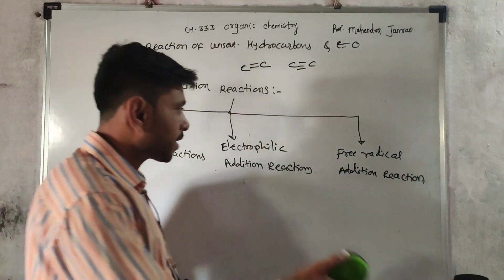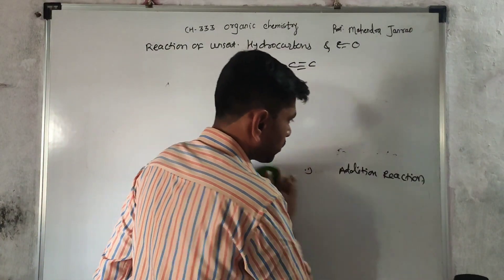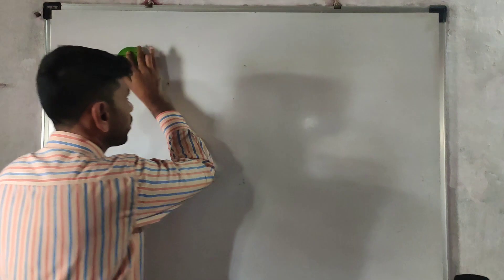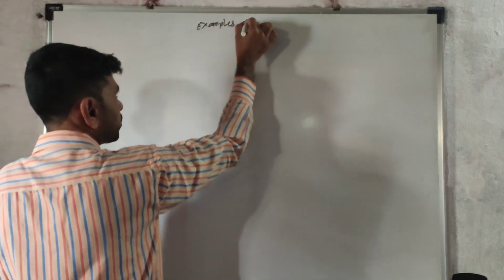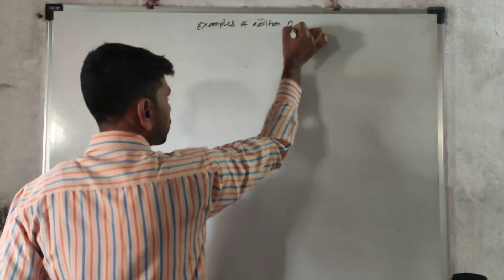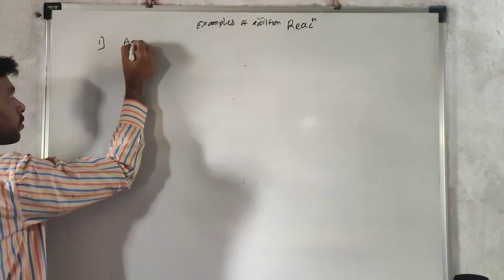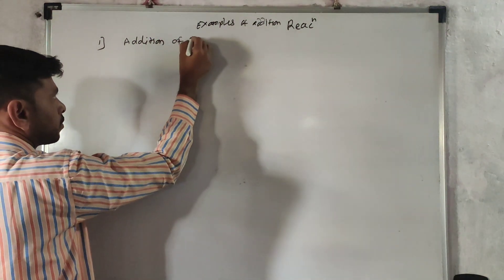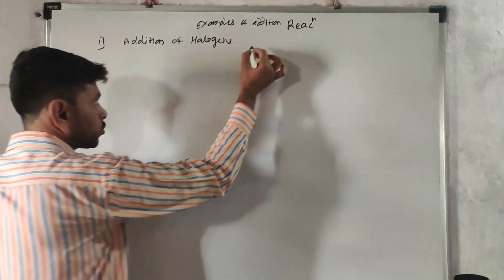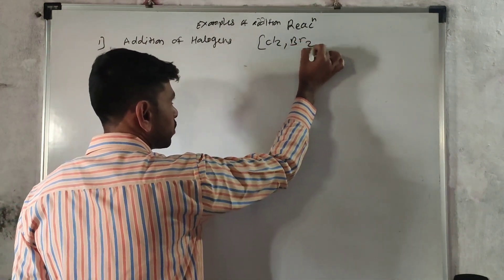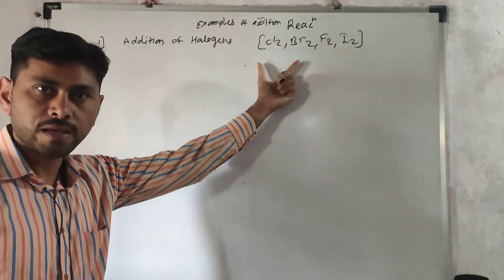Now we have to see some examples of addition reactions — what addition reactions actually are, how reagents are added, and what type of products are obtained. The first example is Addition of Halogens. Halogens are Cl2, Br2, F2, and I2. The addition of these halogens to an unsaturated system — we take a simple unsaturated system, for example propylene, and add a halogen to it.